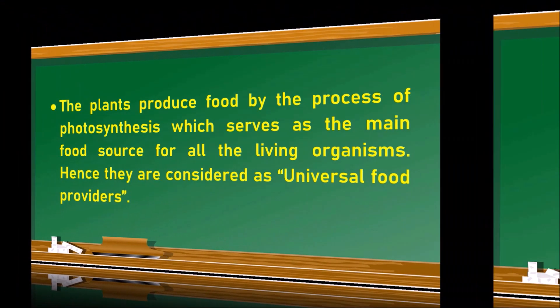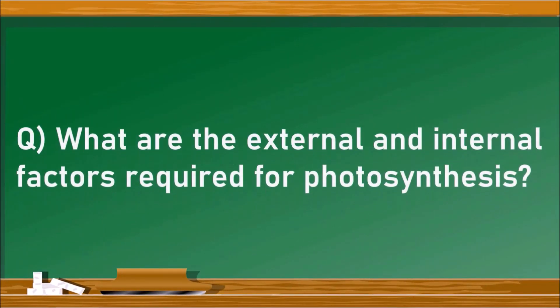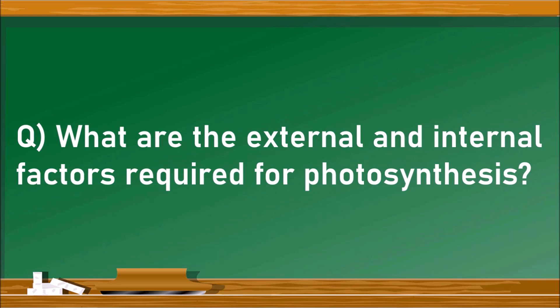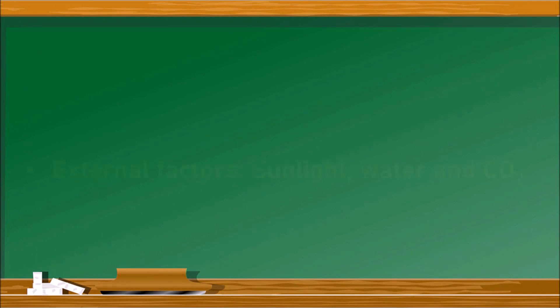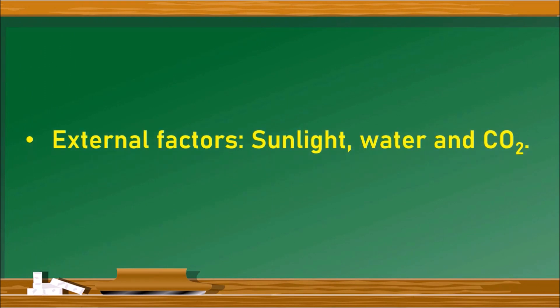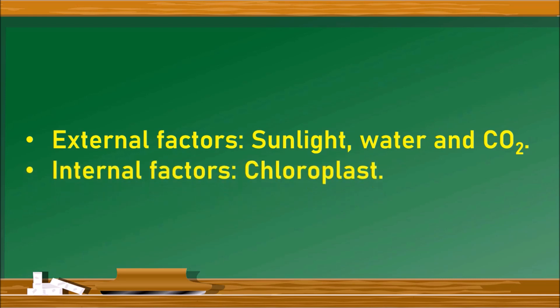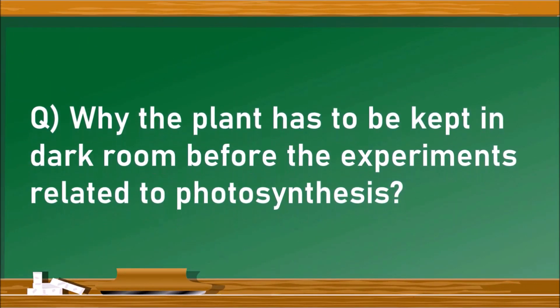The next question is: what are the external and internal factors required for photosynthesis? There are two types of factors. The external factors are sunlight, water, and carbon dioxide, whereas the internal factor is chloroplasts. All these factors help in photosynthesis.